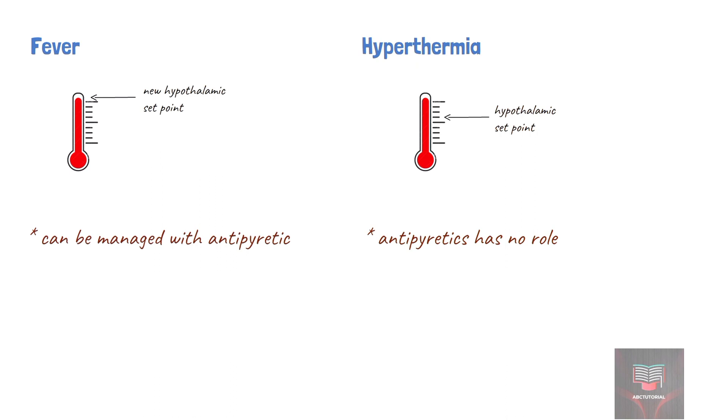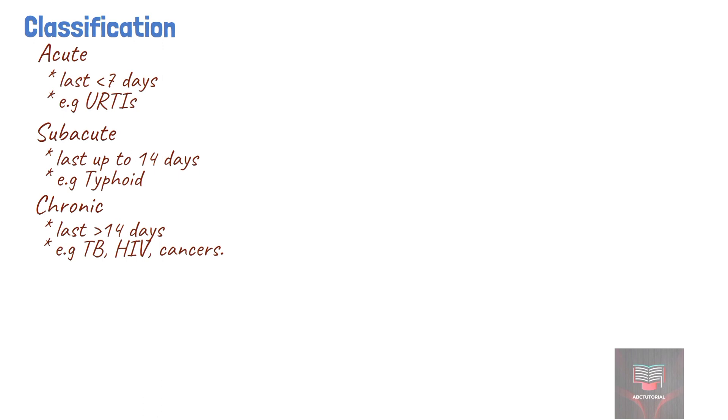Fevers can be classified in different ways. One way is the duration of fever. A fever could be acute, lasting less than seven days as in viral upper respiratory tract infection. It could be subacute, lasting up to 14 days, for example in typhoid. And it could be chronic or persistent, lasting over 14 days as in tuberculosis, HIV, and cancers.